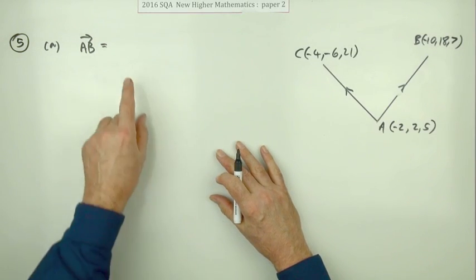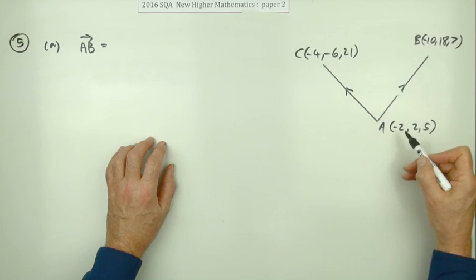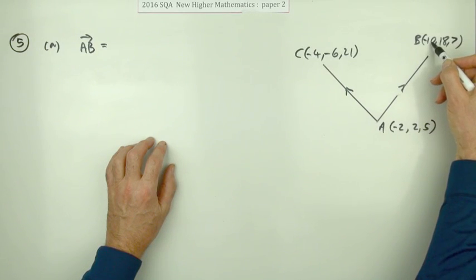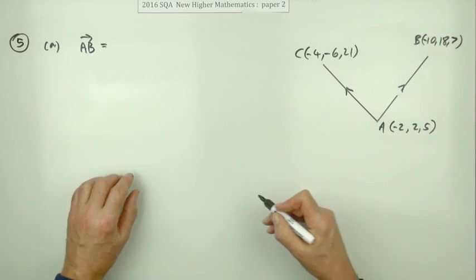Now there's just one mark each, so you could just state them by looking at this. So you could just say A to B, negative two to negative ten is eight back. Two to eighteen is sixteen forward. Five to seven is two forward. And just put that down.